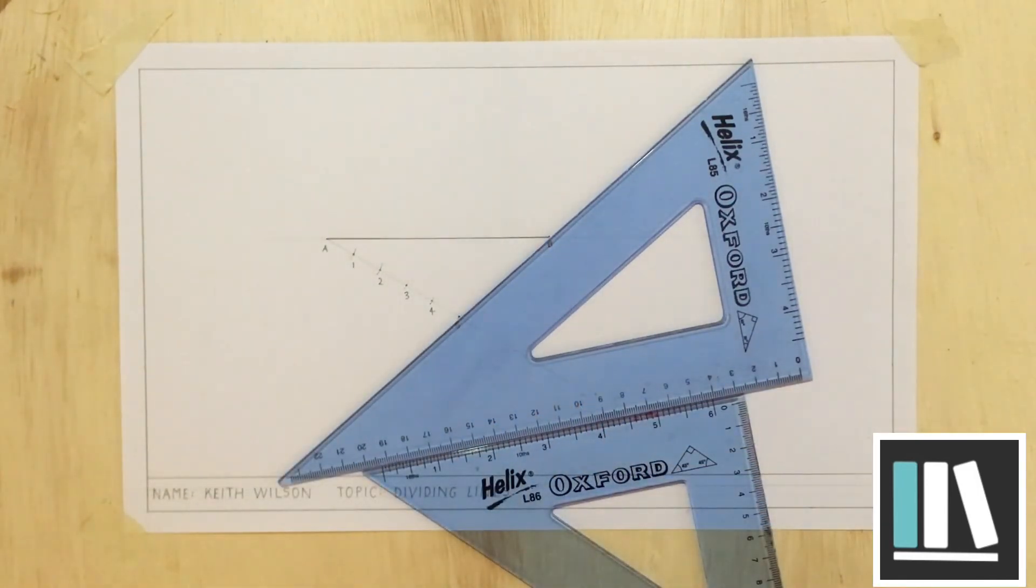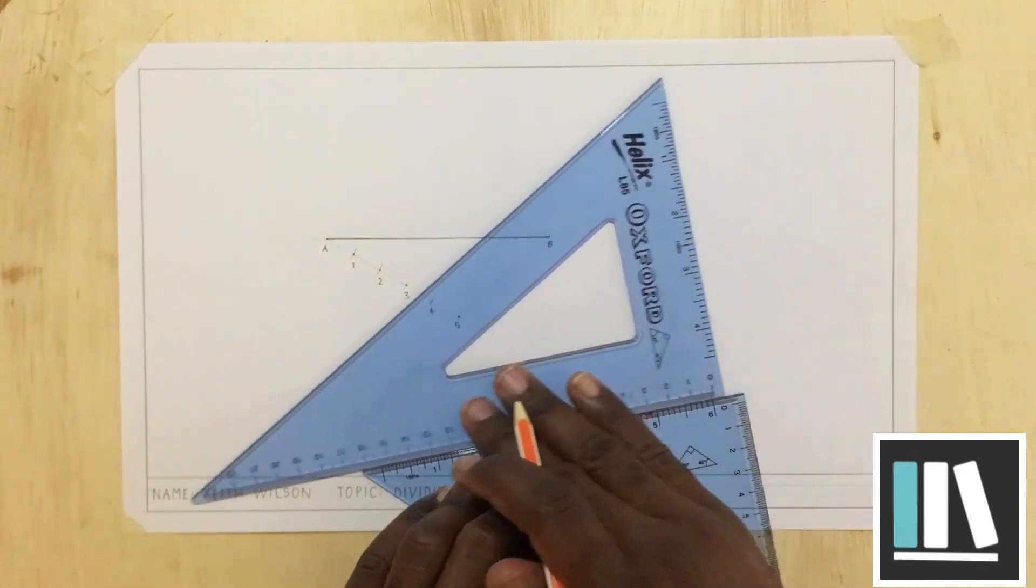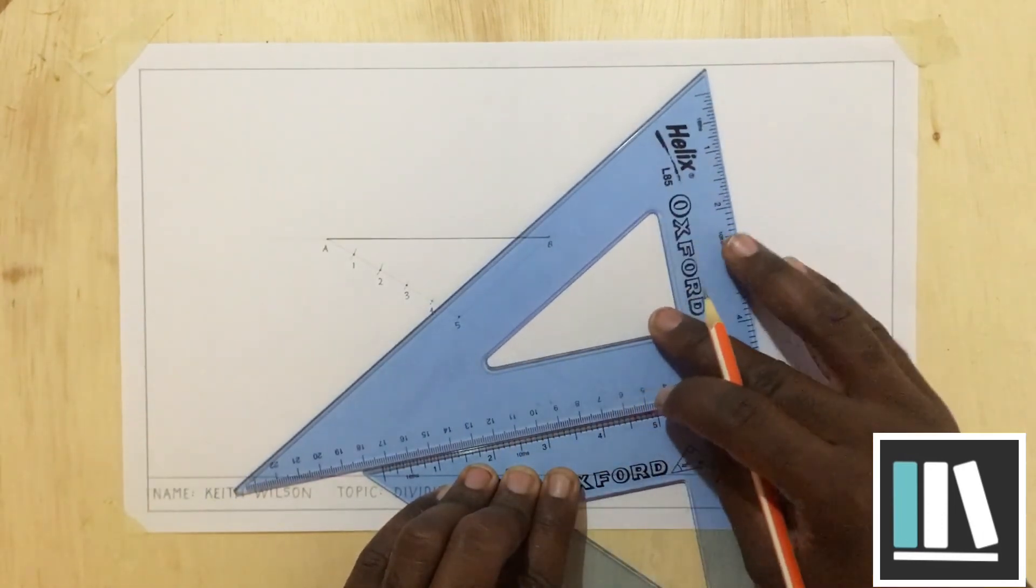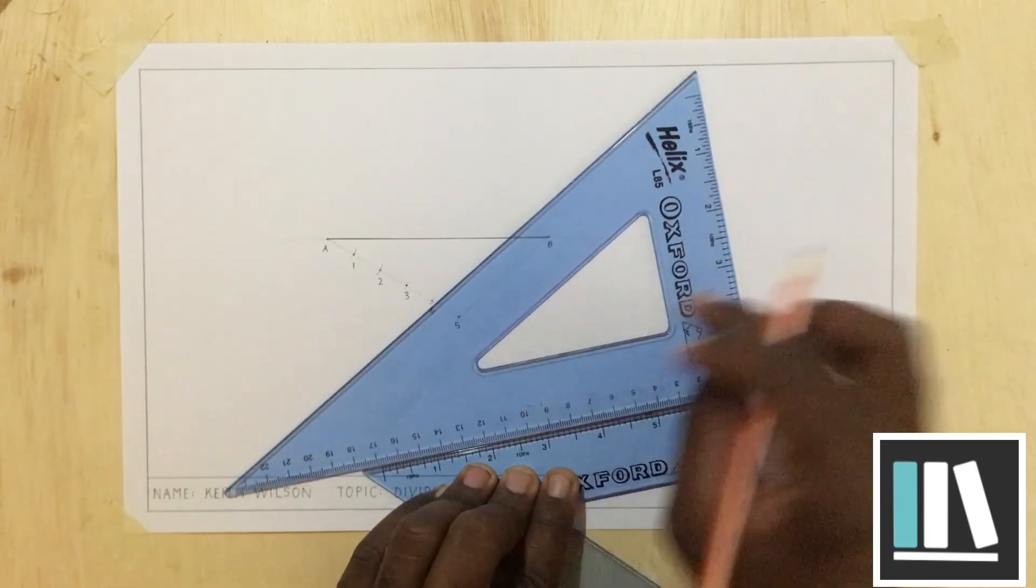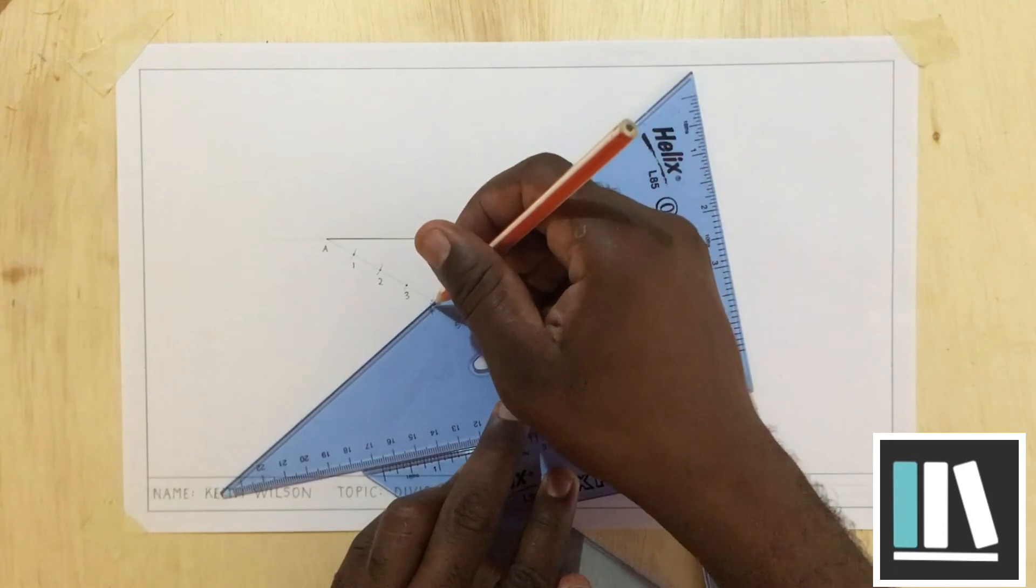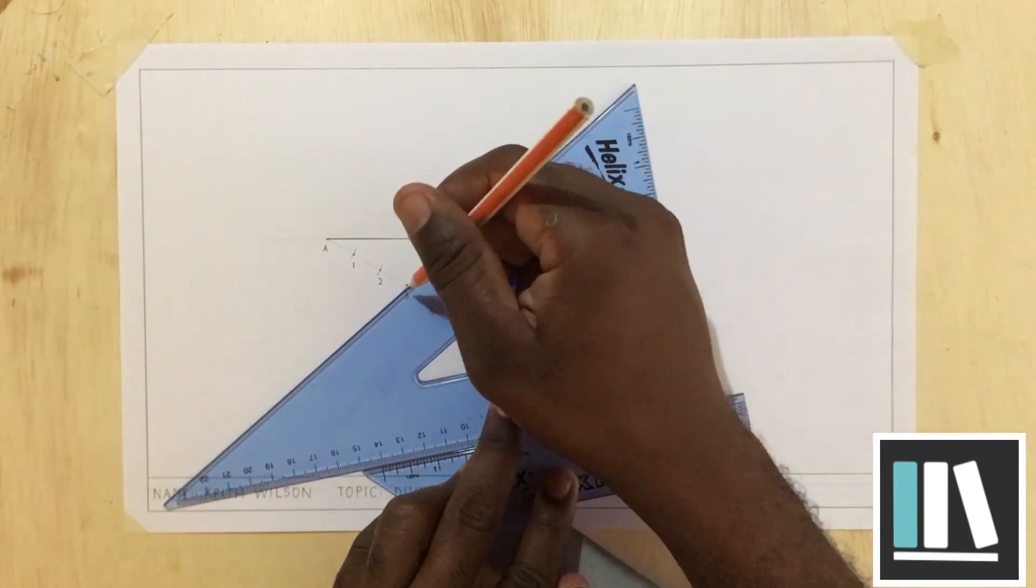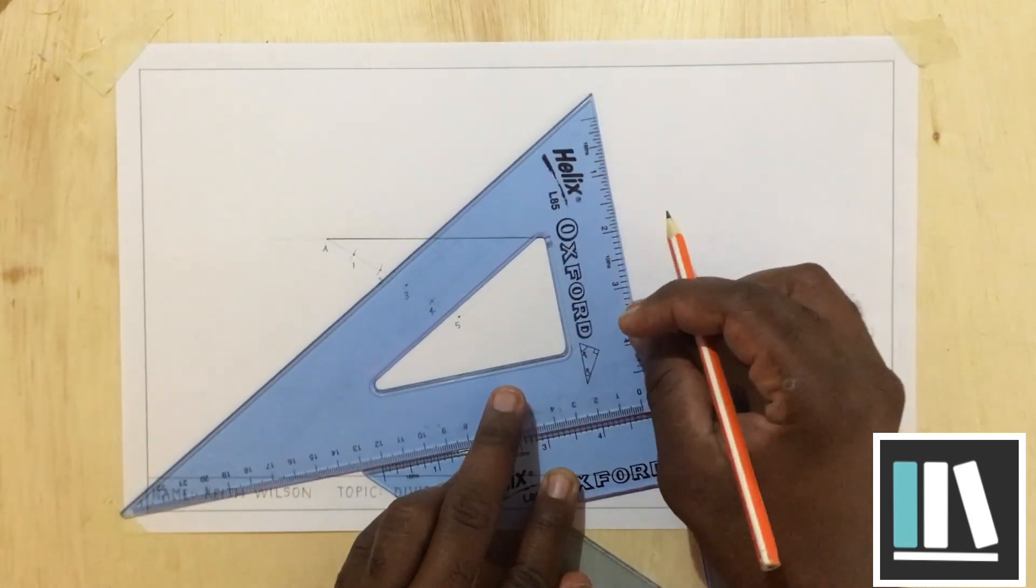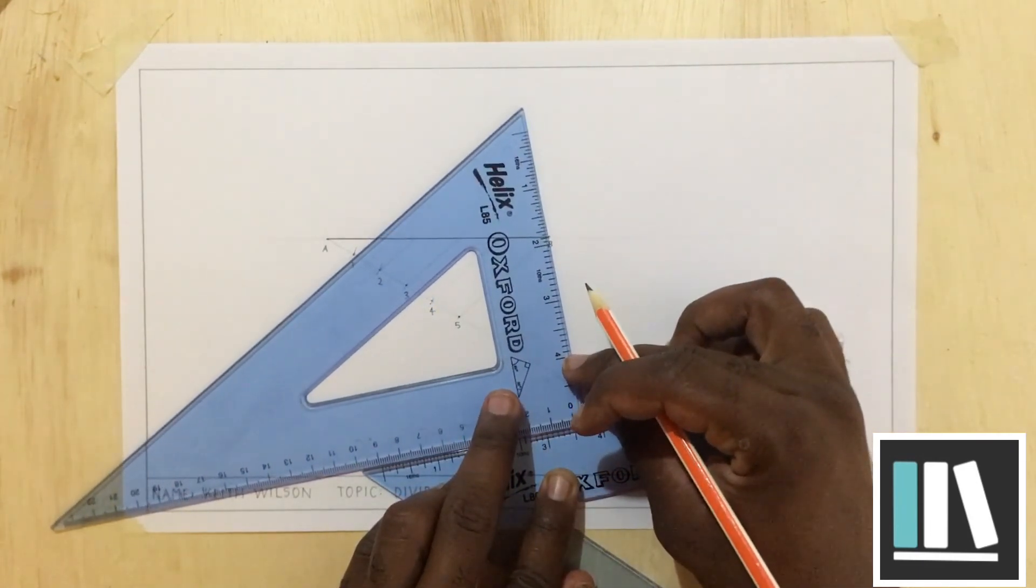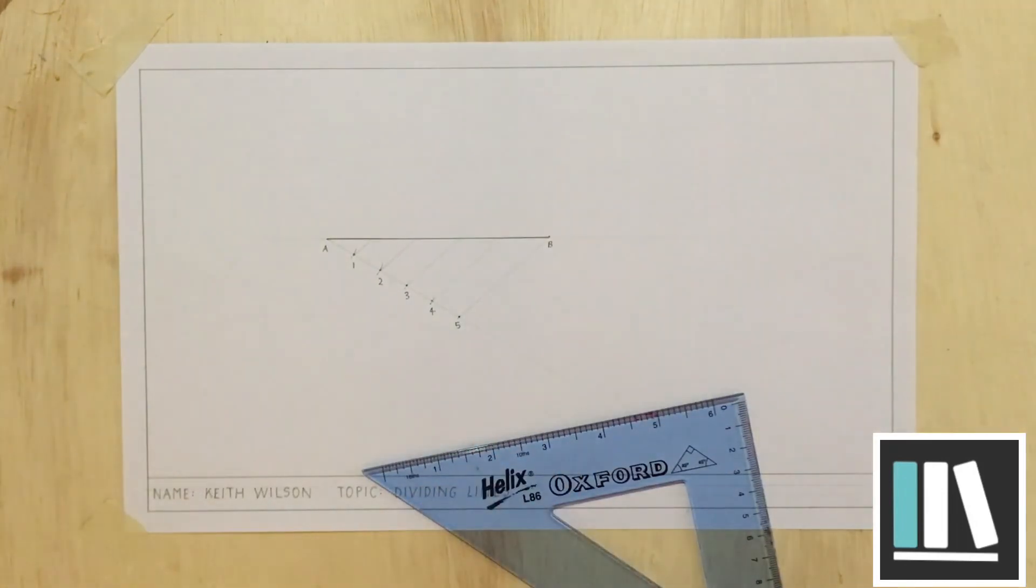Once I've done that, I'm going to firmly press on the second set square, so that the first set square can slide, similar to how it would slide on the T square. Once you've done that, you're going to slide the set square to point 4, ensuring that there's no gap between the set squares. Then, I'm going to draw a construction line from point 4 to where it meets line AB. I'm going to slide again. Point 3 to line AB. Point 2 to line AB. And point 1 to line AB. Once I've connected the last point, then I am through.